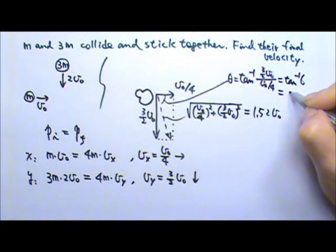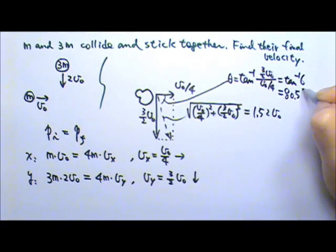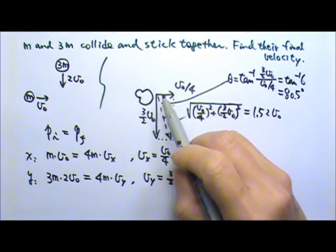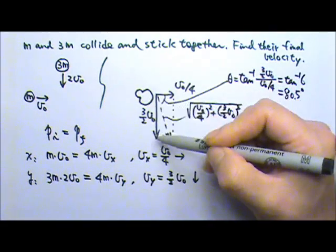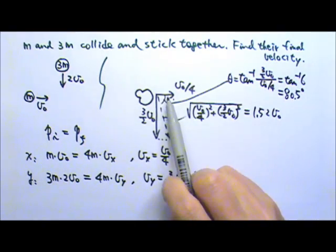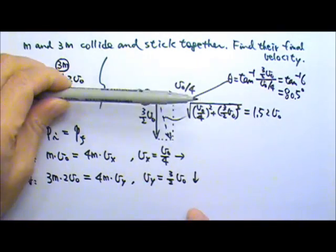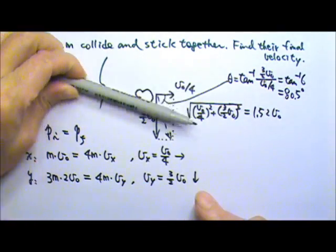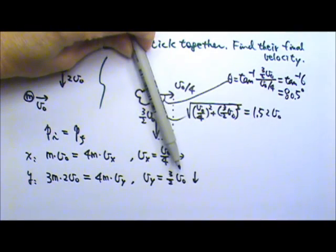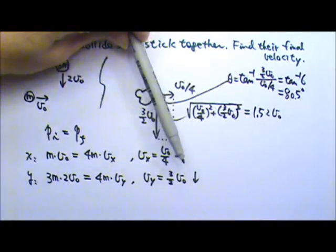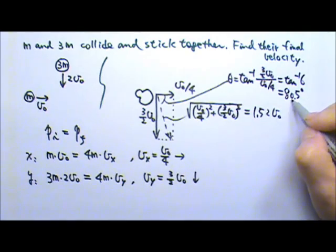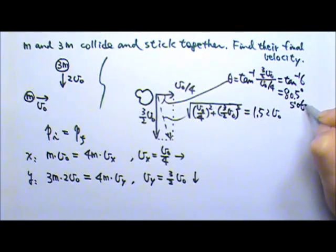Which gives us 80.5 degrees. Now that's east, this is south. So we can say this direction is 80.5 degrees towards the south from the east. So this will be 80.5 degrees south of east.